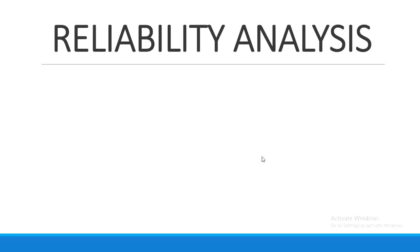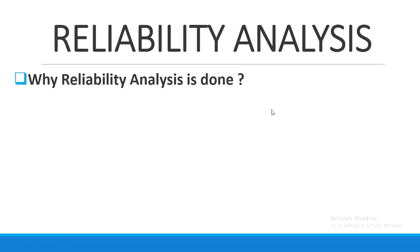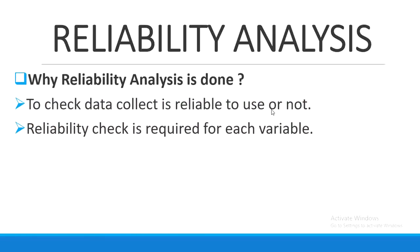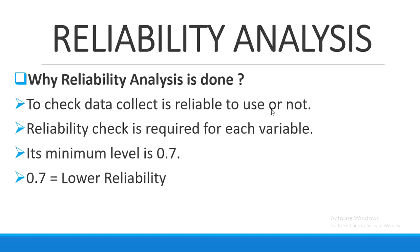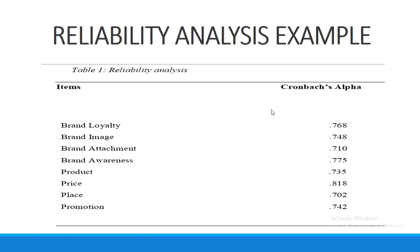Next is reliability analysis. Why is it done? Reliability analysis is done to check whether the data collected and used for analysis is reliable or not. Reliability is required for each variable — whether independent, dependent, or moderator. The minimum acceptable level is 0.7. If reliability is exactly 0.7, it shows lower reliability but is still acceptable. If it's more than 0.7, like 0.8, then it shows higher reliability. The reliability table shows variable item names on the left and Cronbach's alpha values on the right, all of which should be above 0.7.